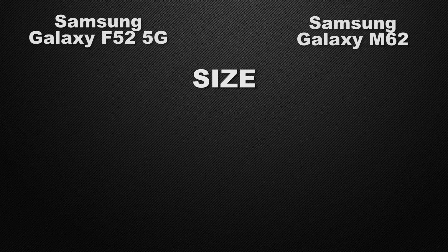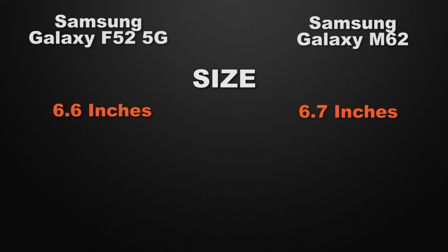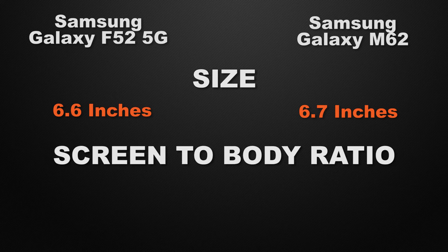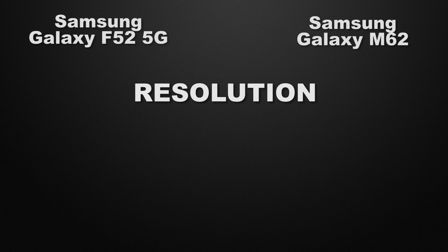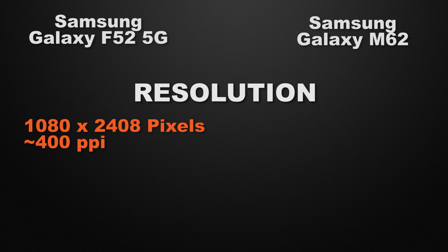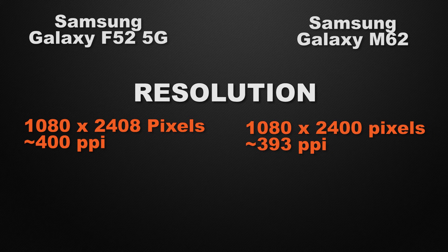Moving to the display features of the devices, let's start with display size. The F52 has a 6.6-inch display, whereas the M62 has a 6.7-inch display, so it's a tie as both devices have approached the same screen size. About the screen-to-body ratio, the F52 has 83.6% whereas the M62 has 86.7%, so the winner is the M62 because it has a bigger ratio. Talking about screen resolution, both the F52 and M62 have Full HD Plus displays, so it's a tie.